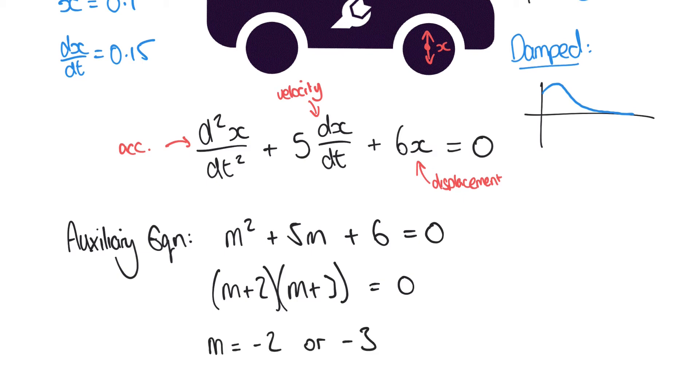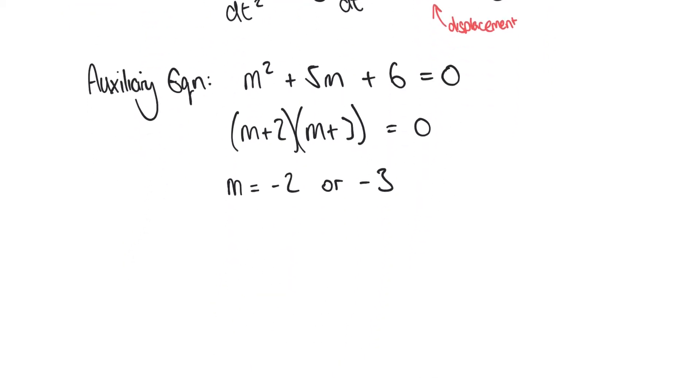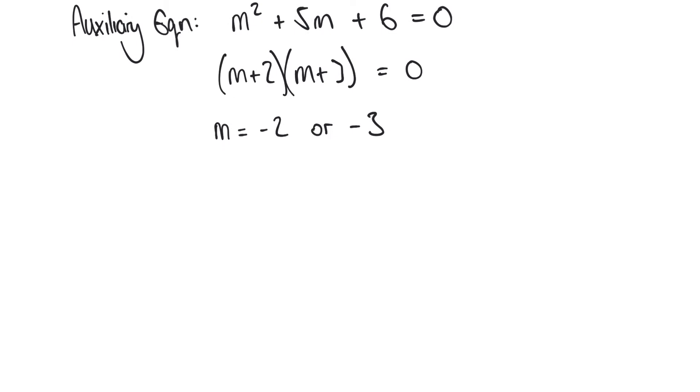So here we have two real numbers as our roots and they are unequal numbers, they're not the same. And so we said in our first video that any set of roots for m that are in the form of real unequal numbers, the solution has to be written in this form: x = Ae^(-2t) + Be^(-3t).